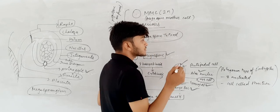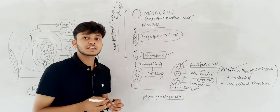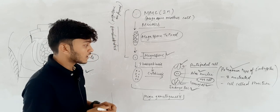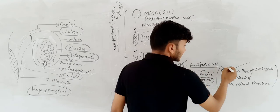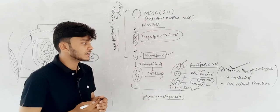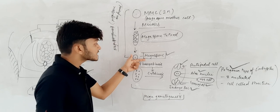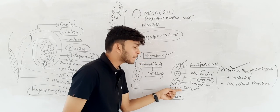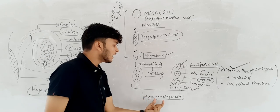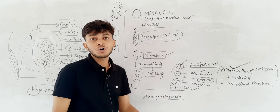This kind of embryo sac is known as the Polygonum type of embryo sac — 7 cells and 8 nuclei. This entire process is known as megagametogenesis.